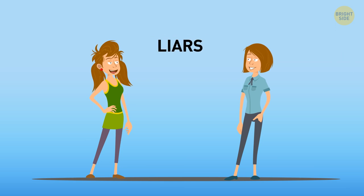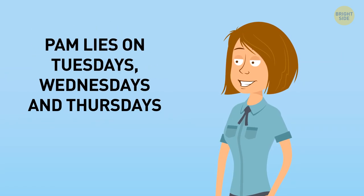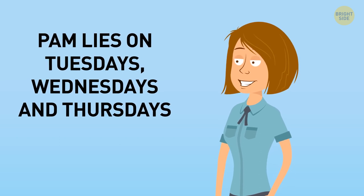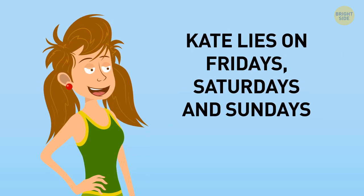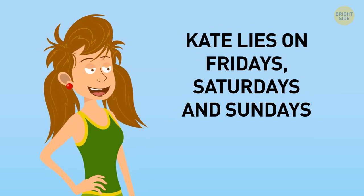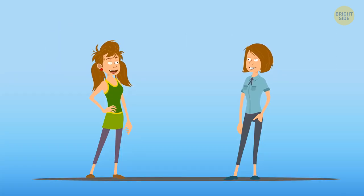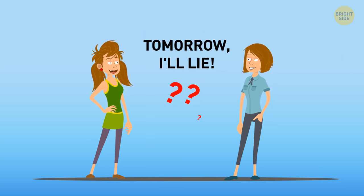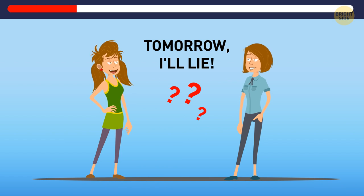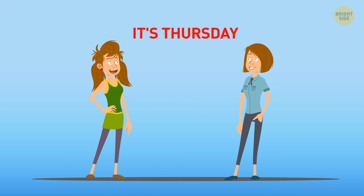Kate and Pam are liars. They both lie on specific days. Pam lies on Tuesdays, Wednesdays, and Thursdays. She speaks the truth the rest of the time. And Kate lies on Fridays, Saturdays, and Sundays. As for all other days, she speaks only the truth. Can you figure out that one day of the week when both Kate and Pam can say, tomorrow, I'll lie.